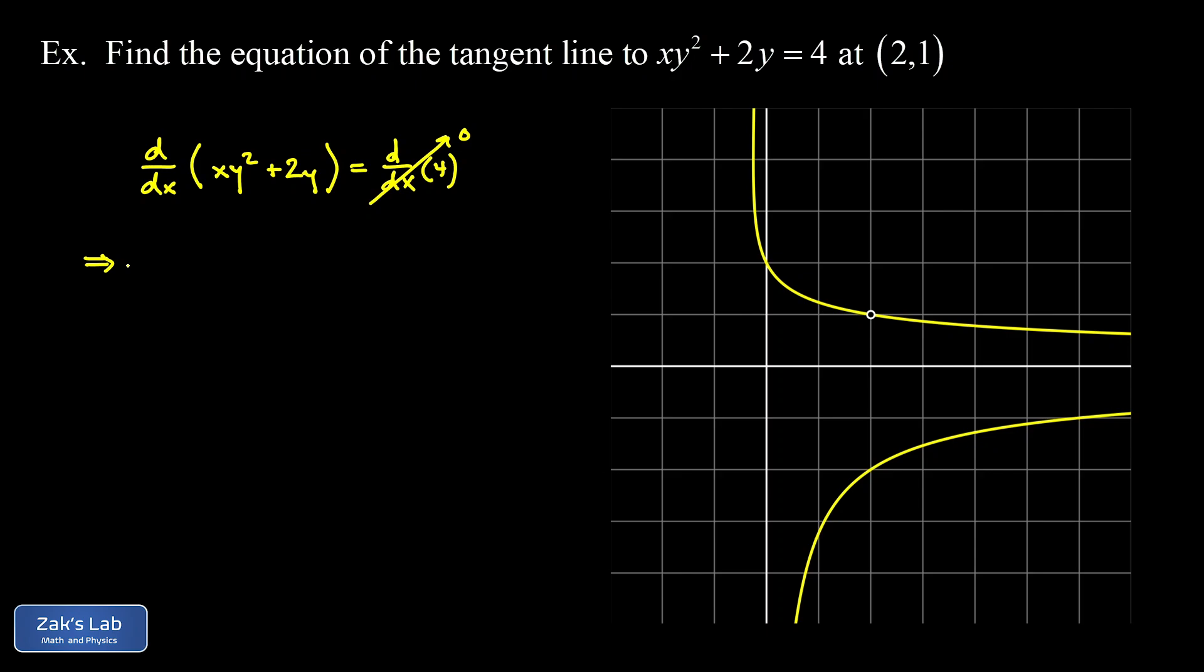And now we get to the interesting part. I have to take the x derivative of this implicit function that has x's and y's in it. And remember that y is some function that depends on x. The fact that they're tangled up together in a single equation means the y depends on x.